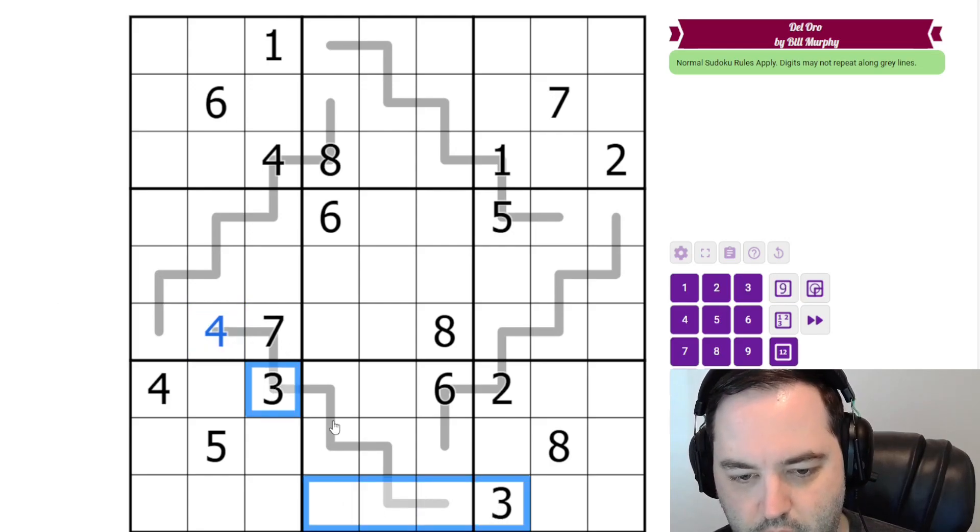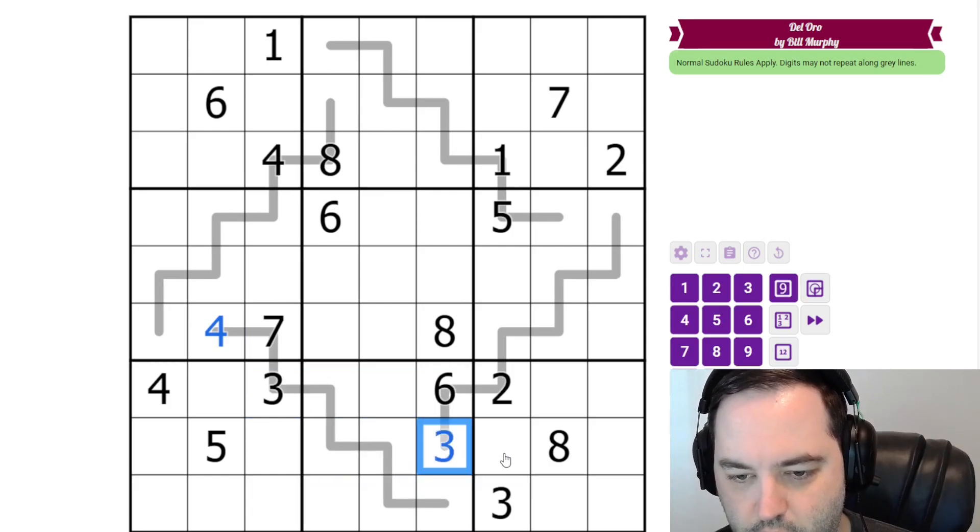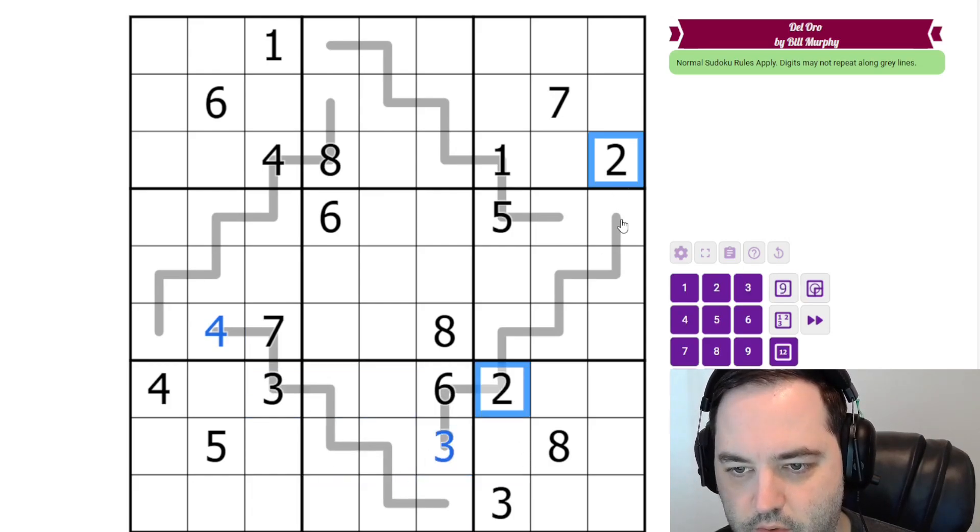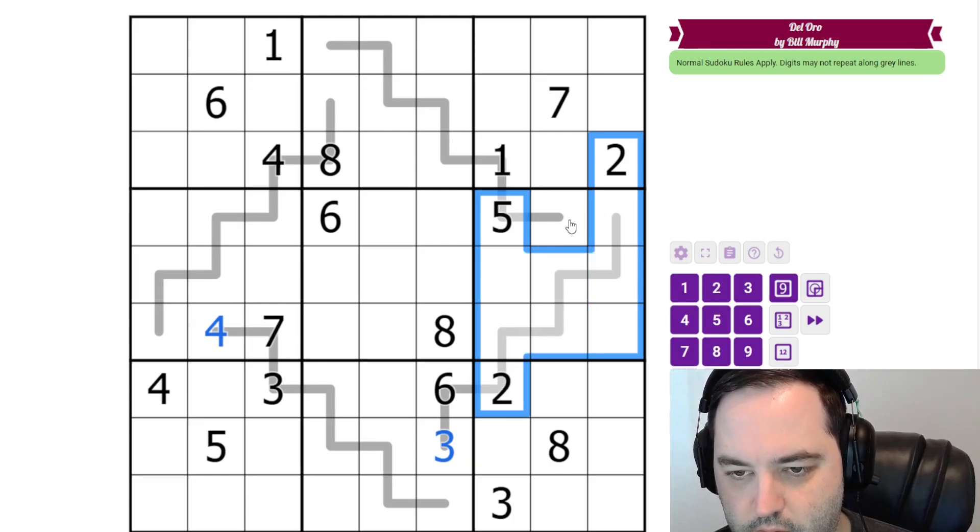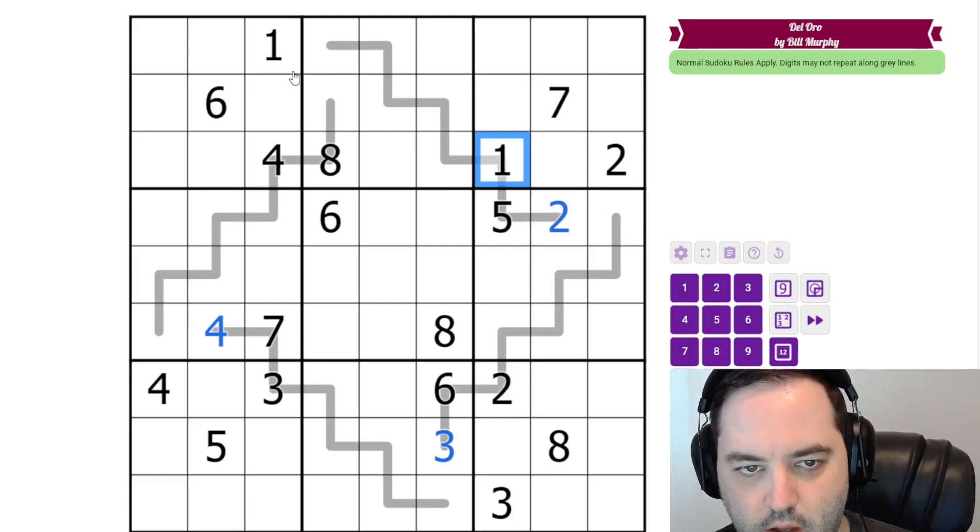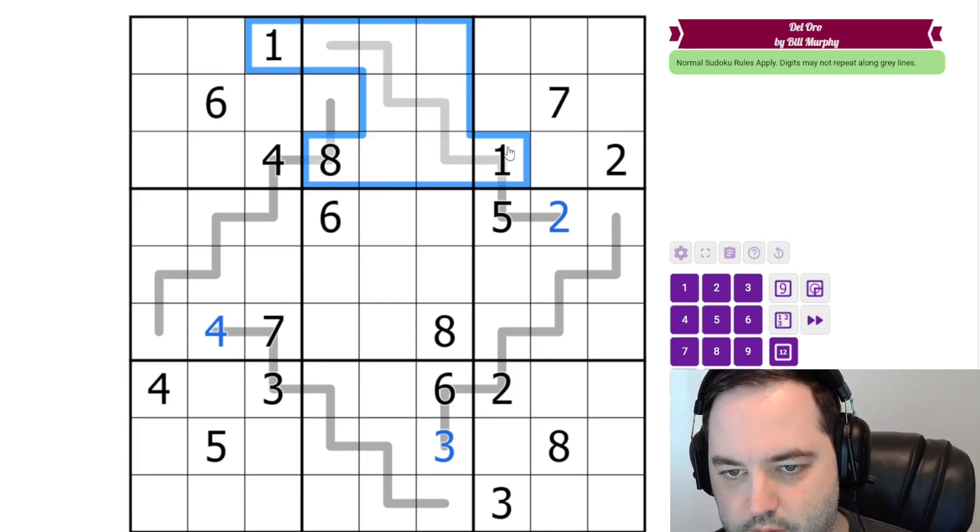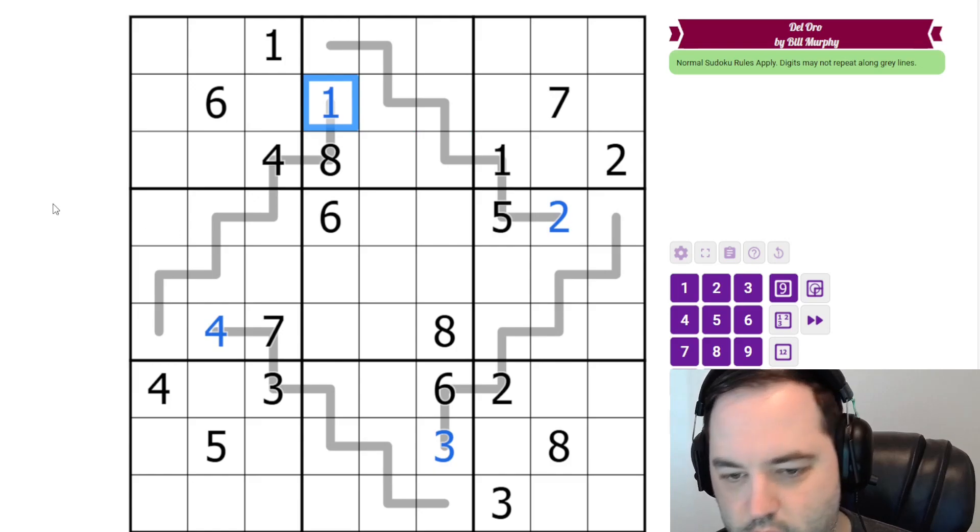3 is the same here. It can't go in these cells or these cells on the line, so it must go here. 2 in this box can't go in these cells or these two cells because of this 2, so it goes here. And 1 can't go in these cells, or these cells, or these cells because of this 1. So 1 goes here.